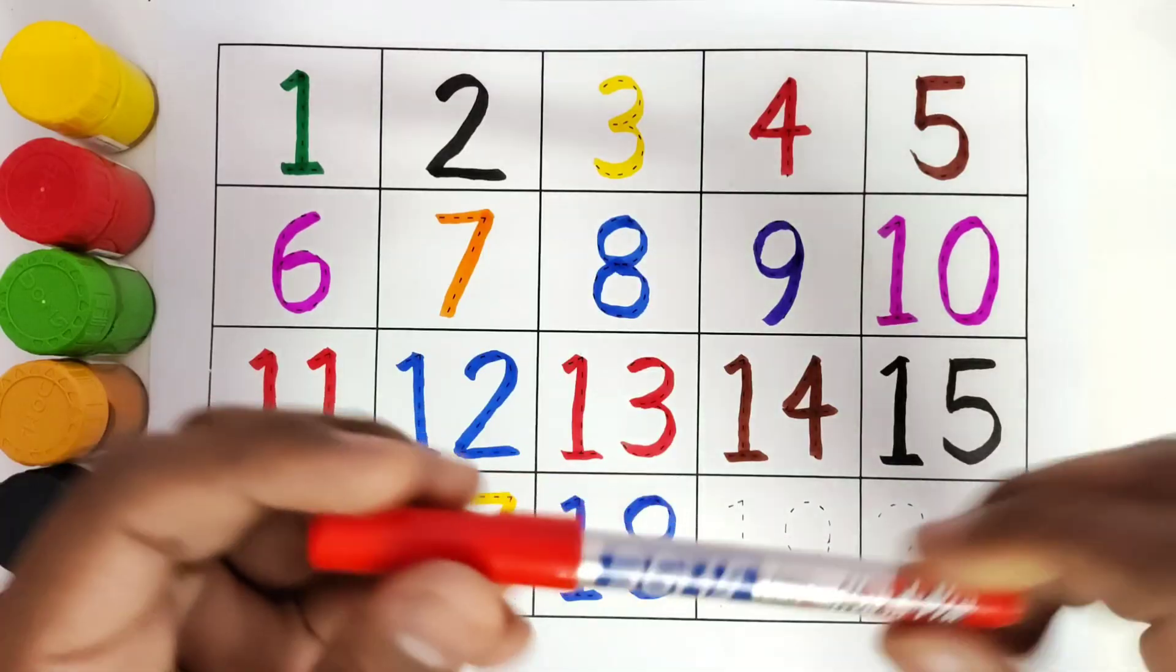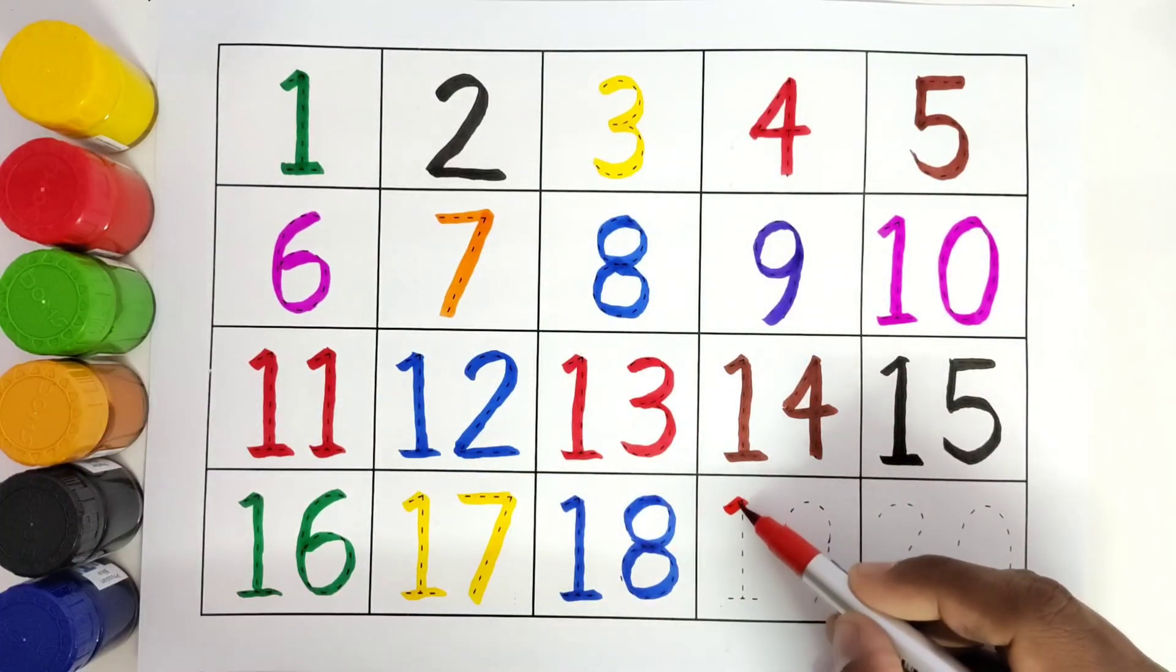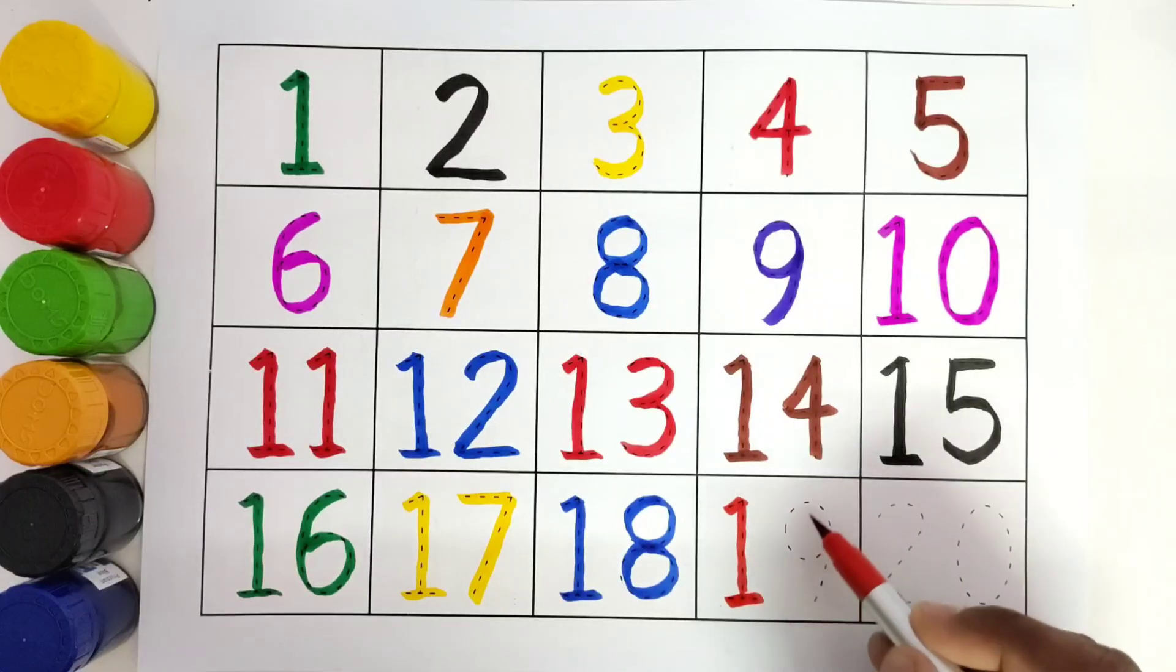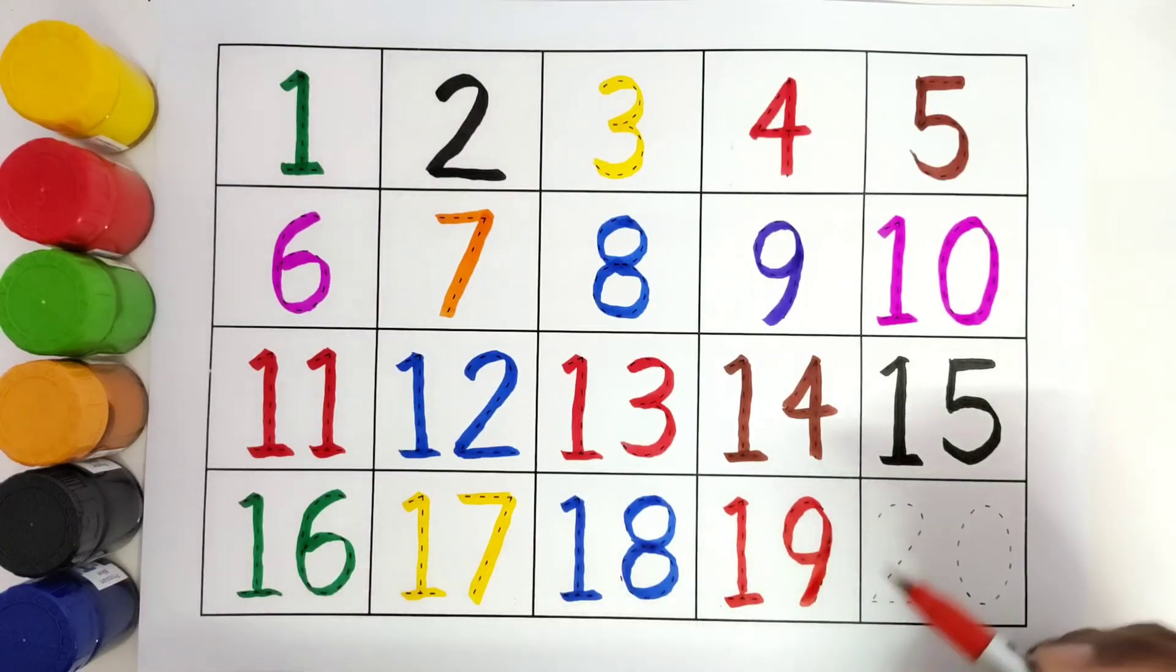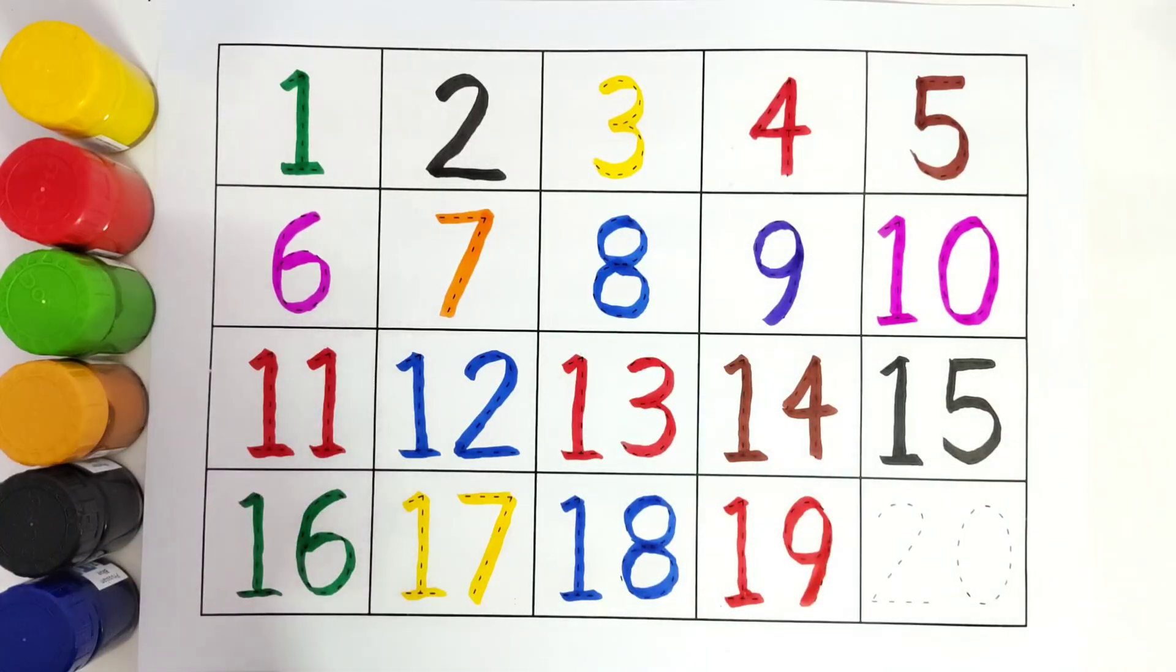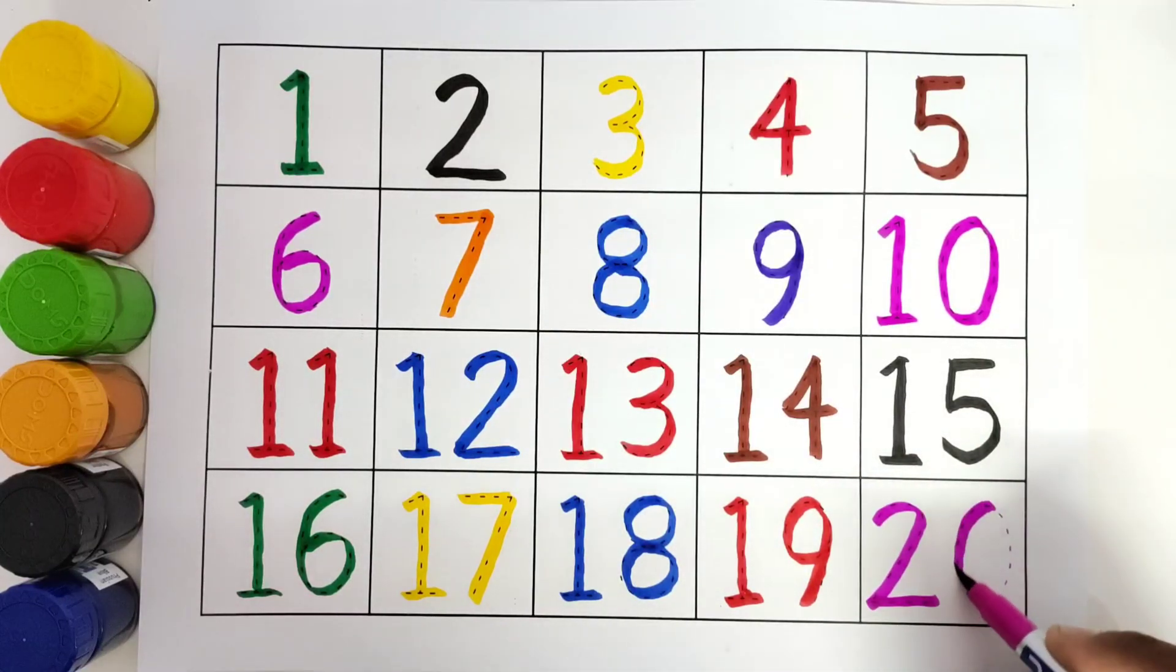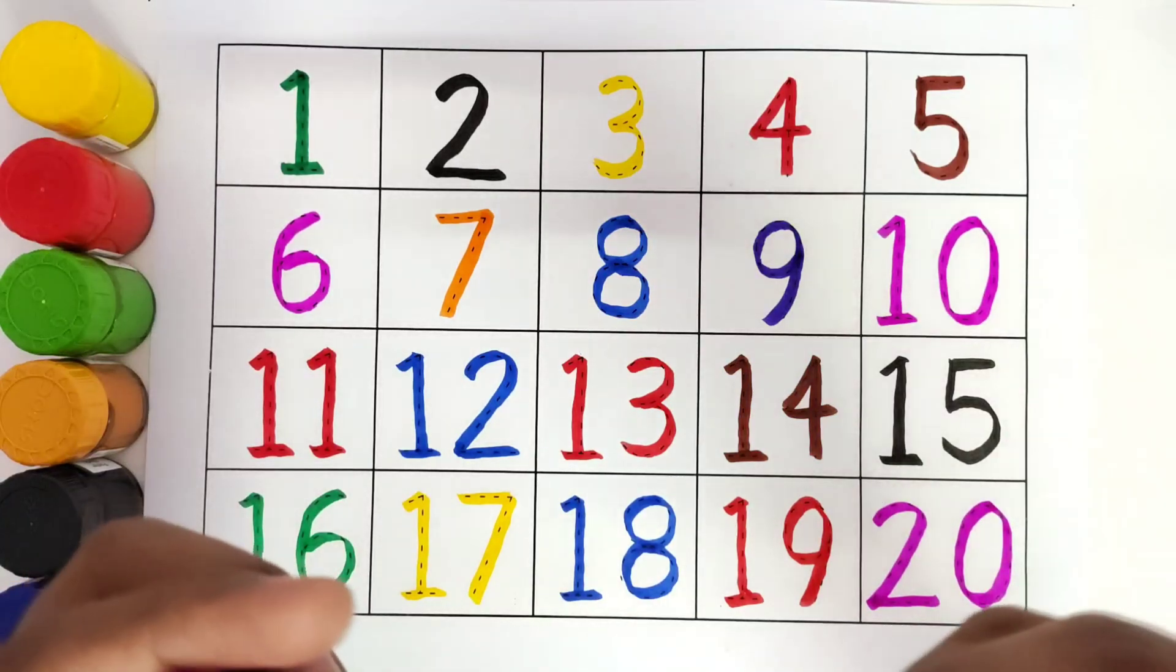This is red color. Number 19. 1, 9. 19. This is pink color. Number 20. 2, 0. 20.